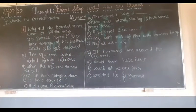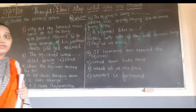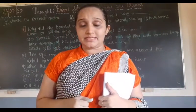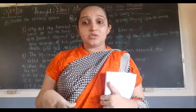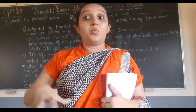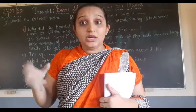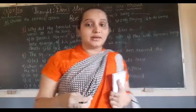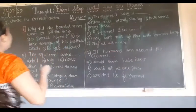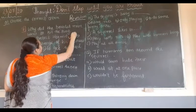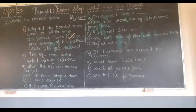Why did the bearded man want to kill the king? The bearded man entered the hermit's place to kill the king. But why did he want to kill the king? To take revenge for his brother's death.